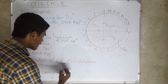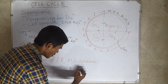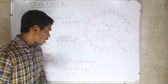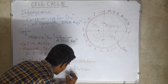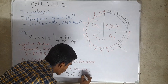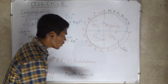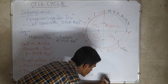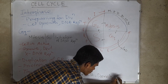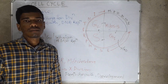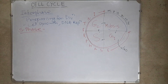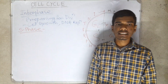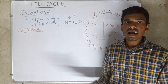There is no division taking place in G1 phase. The main functions of this phase are growth and development. After G1 phase, S phase takes place. The S phase is called the synthesis phase.